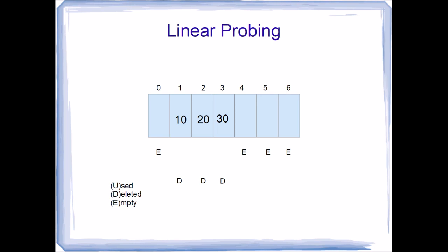A value is considered valid and part of the hash table only when the element storing it is marked used. Either empty or deleted means the element does not contain a valid value. We need two different designations so that linear probing can continue and doesn't immediately end when it encounters an element marked as deleted.